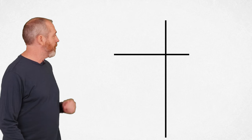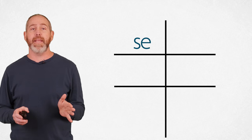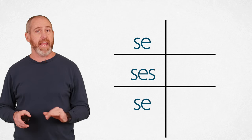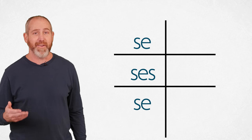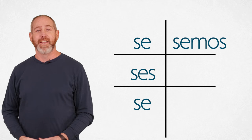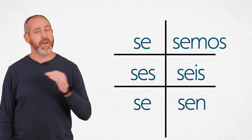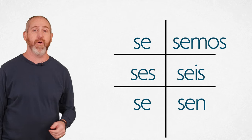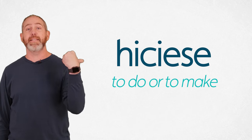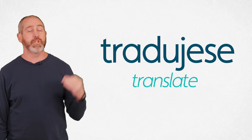Now here's the other set of endings: yo form is -se, tú is -ses, él/ella is -se, nosotros is -semos, and then -seis and -sen. So looking at those same verbs: hablara becomes hablase, hiciera becomes hiciese, and tradujera becomes tradujese. You can use either set — get comfortable with one, then pull in the other.